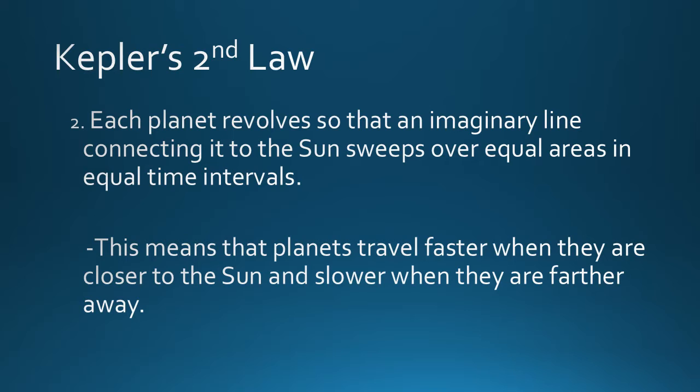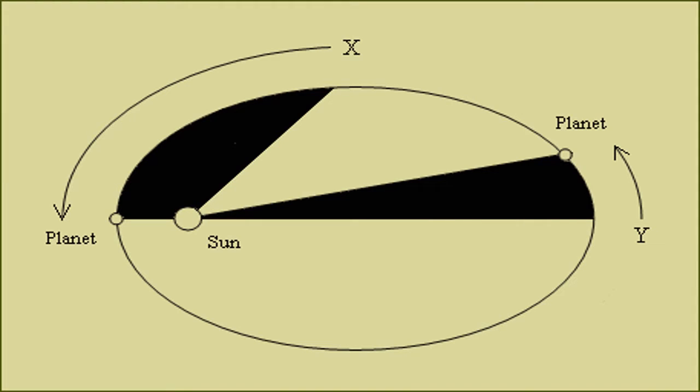Kepler's second law states that each planet revolves so that an imaginary line connecting it to the Sun sweeps over equal areas in equal time intervals. What that means is that planets travel faster when they're closer to the Sun and slower when they're farther away. You can see the planet on the left side of the diagram moving faster when it's closest to the Sun, and planet Y on the right side moving slower because it's farther away.